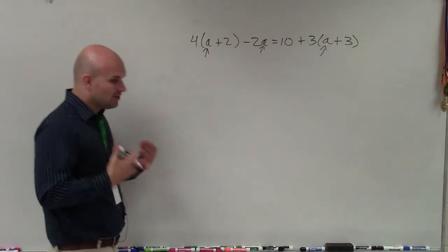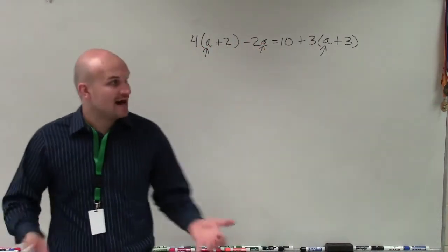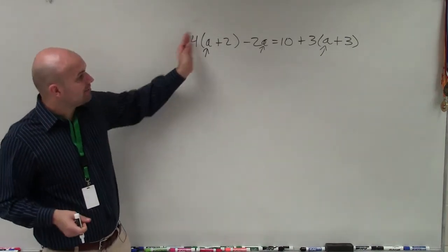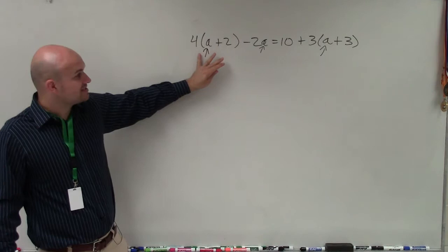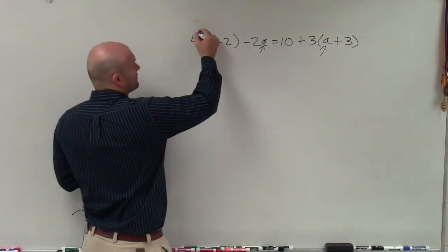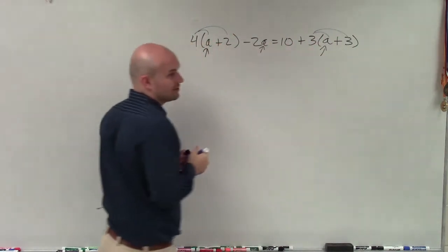Whenever we're dealing with multi-step, it doesn't matter if the variable is on the same side or on opposite sides, we have to simplify the equation. To simplify, what I mean is apply distributive property if we have parentheses, and then combine like terms. So basically, wherever I have my parentheses I can apply distributive property, and that's what I'm going to go ahead and do.